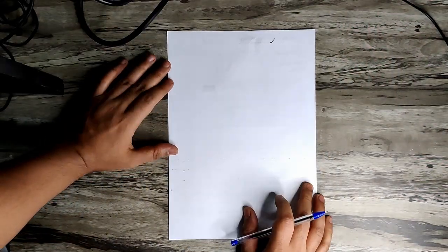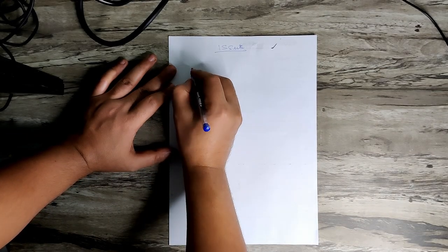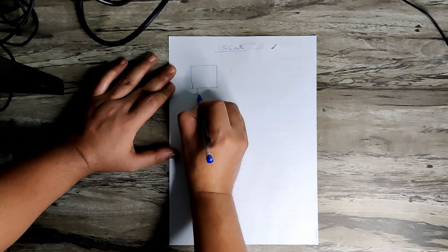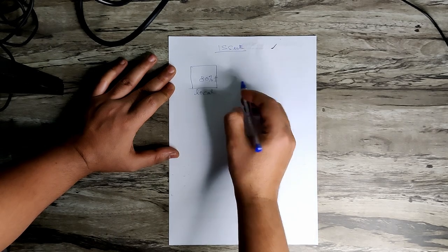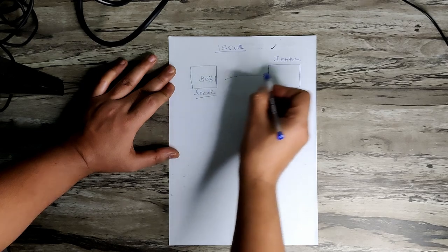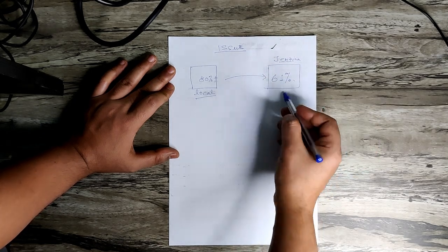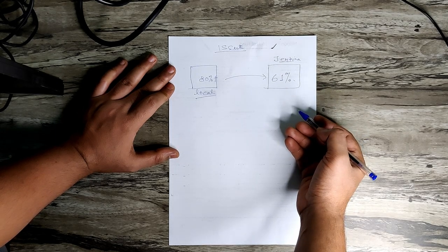I just analyzed the issue I was talking about — it's a pretty interesting one and it took a lot of time to get to the core of it. Let me explain it on a piece of paper. The issue was: code is written, and in local its coverage is more than 80 percent, but when deployed to the Jenkins pipeline the code coverage dropped to 61 percent, which caused the build to fail.